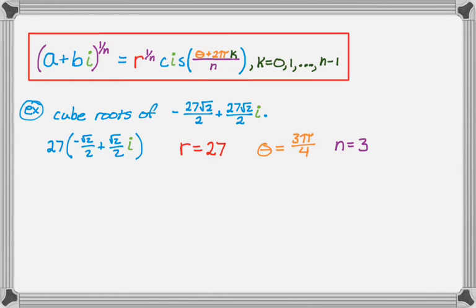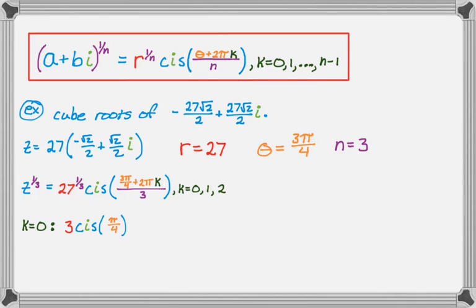So I'm going to call this z just to simplify things. So z to the 1/3 is 27 to the 1/3, cis. And now I'm just plugging everything in here. And k goes from 0 to 2 because I stop at n minus 1. So n is 3. So 0, 1, 2. And now I just plug in. So if k is equal to 0, I get this. Which I'm tempted to expand because that's a unit circle angle. But I'm going to leave it just because this video is not really about that.